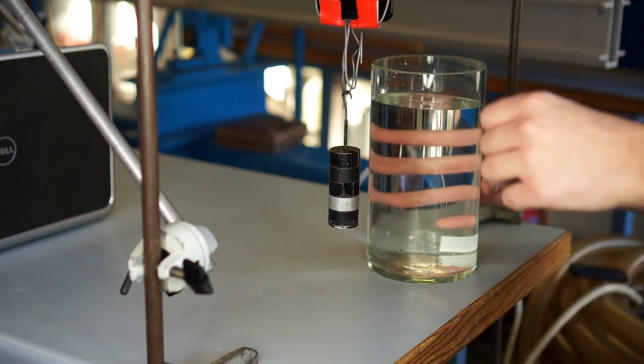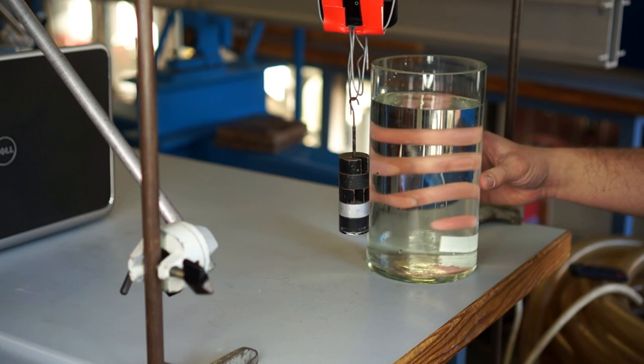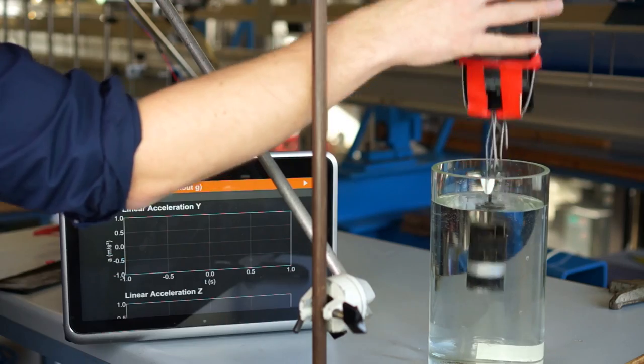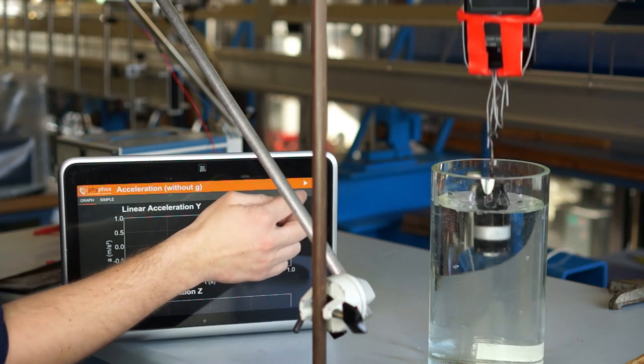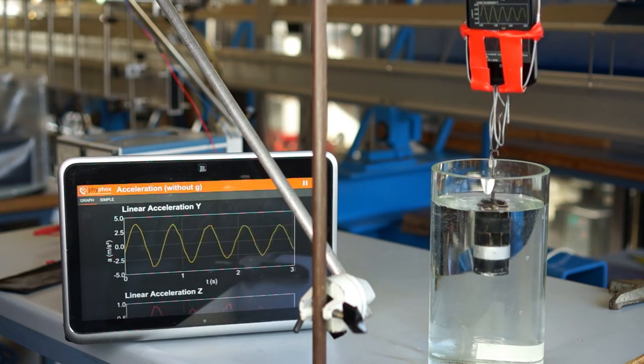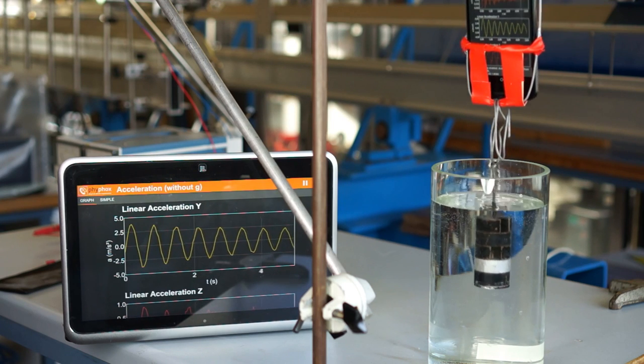The damping is achieved by submerging a part of the oscillator underwater. Obviously, the phone should not be submerged. When recording the data with the raw sensor experiment, you can clearly see how the motion is damped over time.